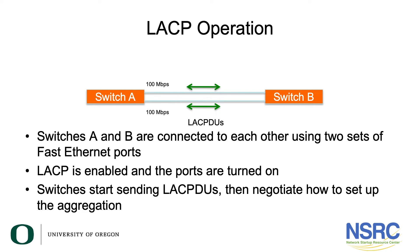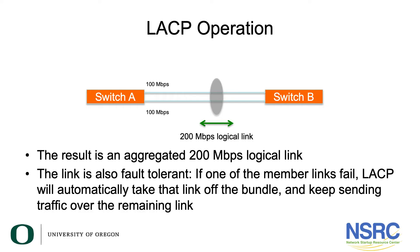In this diagram we have two switches, Switch A and Switch B, both connected with two 100Mbps links. They start sending LACPDUs across these links and negotiate how to set up the aggregation. The result is an aggregated 200Mbps logical link. It's also fault tolerant — if one link breaks, you don't lose the entire bundle. It will drop to 100Mbps and keep sending traffic over the remaining link, and when fixed it will restore the full 200Mbps.